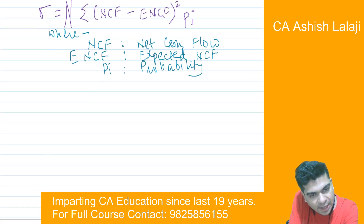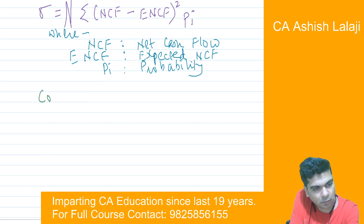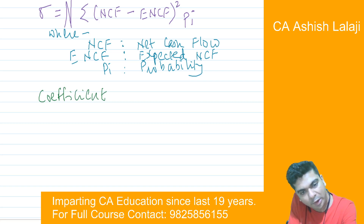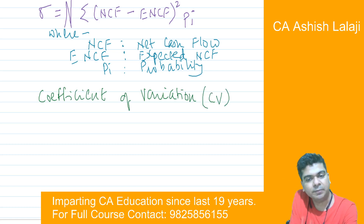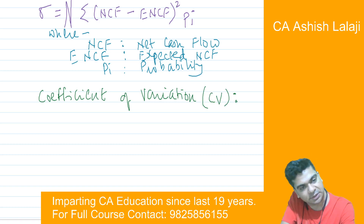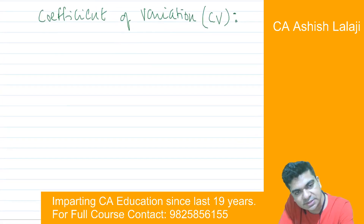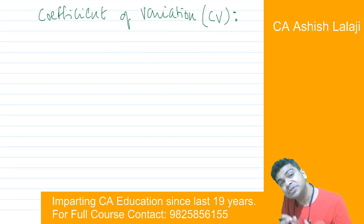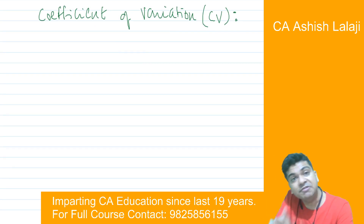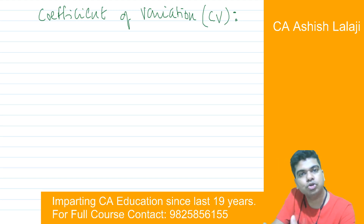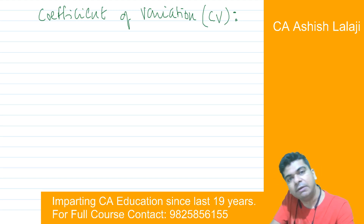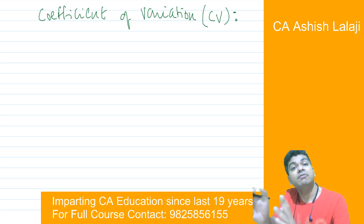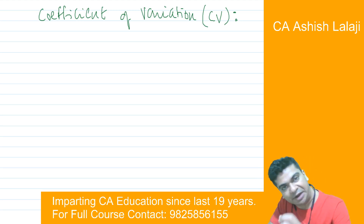We also have something known as the coefficient of variation, popularly known as CV. When you calculate standard deviation, it is an absolute term, so we are not in a position to compare the standard deviations of two projects. It's quite possible that the standard deviation of one project is higher, but it might also be giving you a higher return. So we have to balance between risk and return, and that risk-return balancing is done by the coefficient of variation.